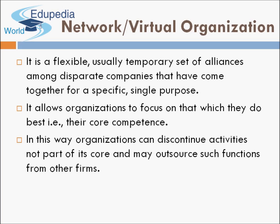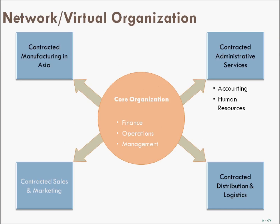It is a flexible, usually temporary set of alliances among different companies that have come together for a specific single purpose. It allows organizations to focus on what they do best — their core competence. In this way, organizations can discontinue activities not part of their core and source such functions from other firms. For example, a company that is good at finance, operations, and management keeps those functions in-house, but outsources accounting, HR, distribution, logistics, sales, marketing, and manufacturing to contracted partners.